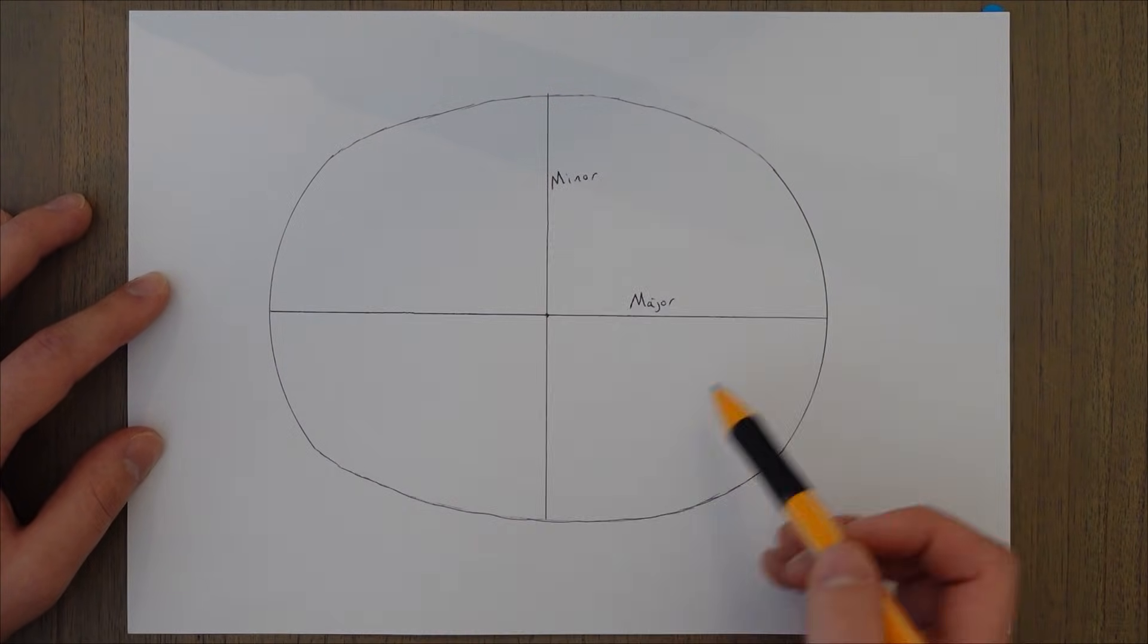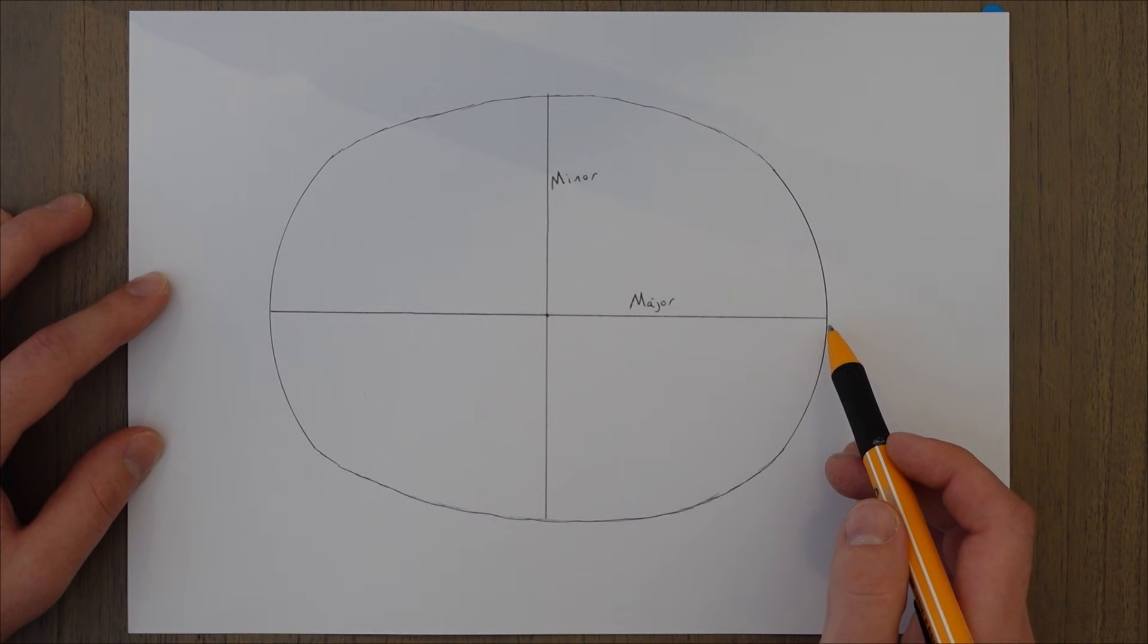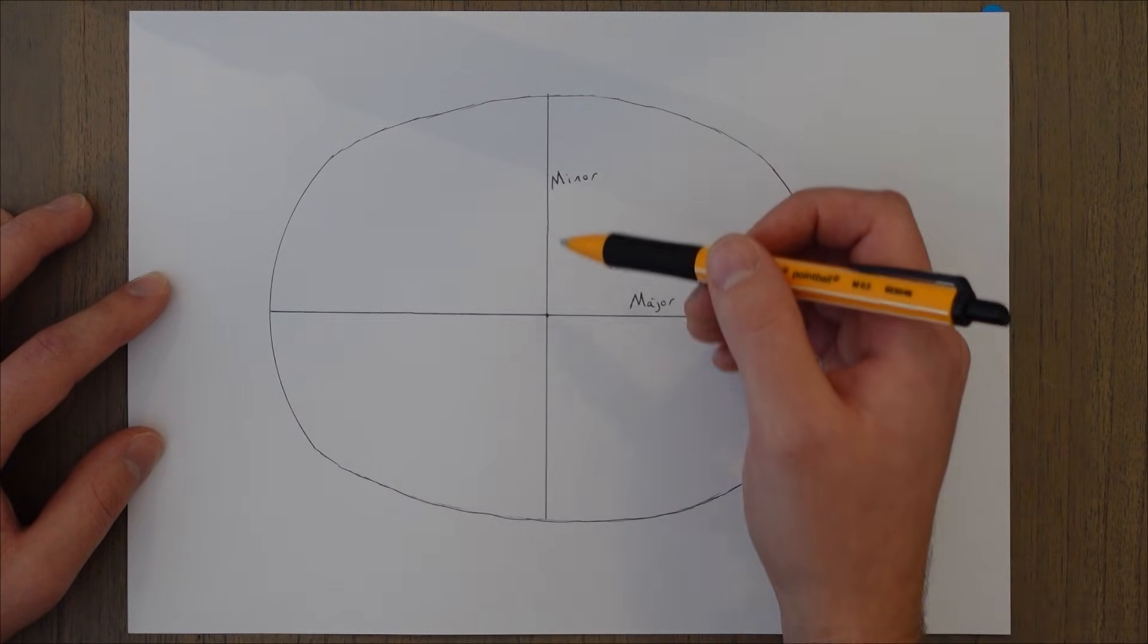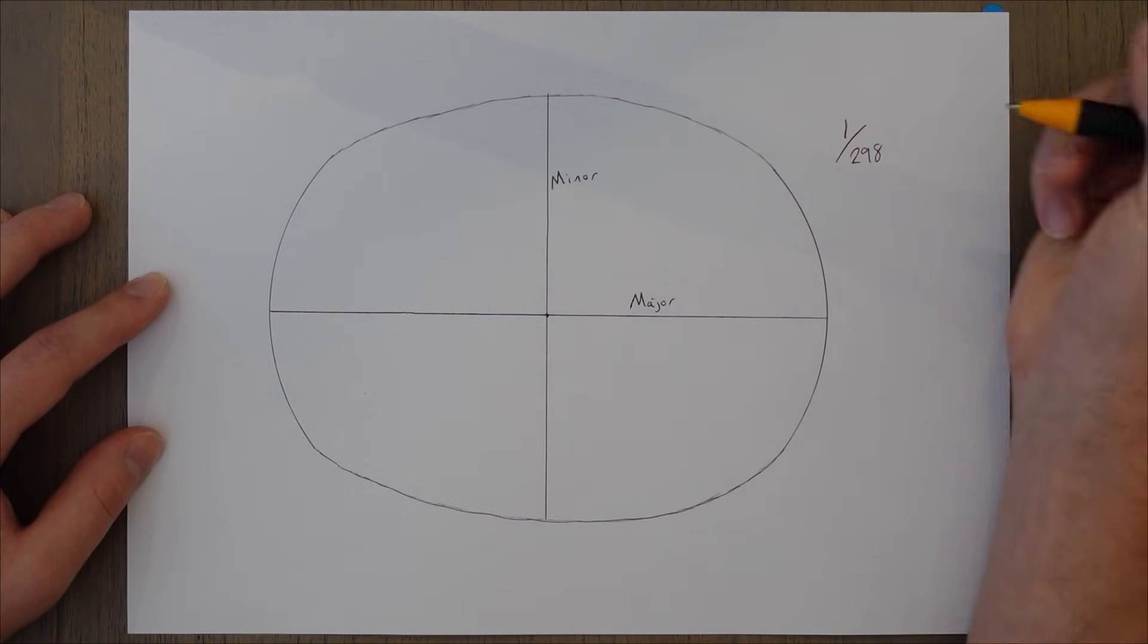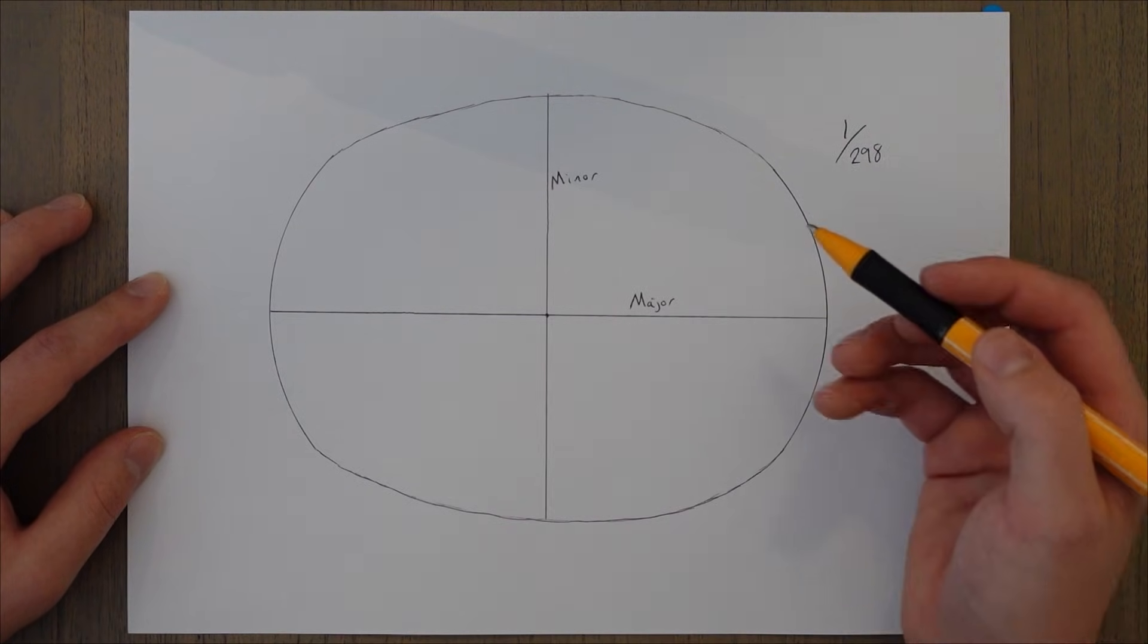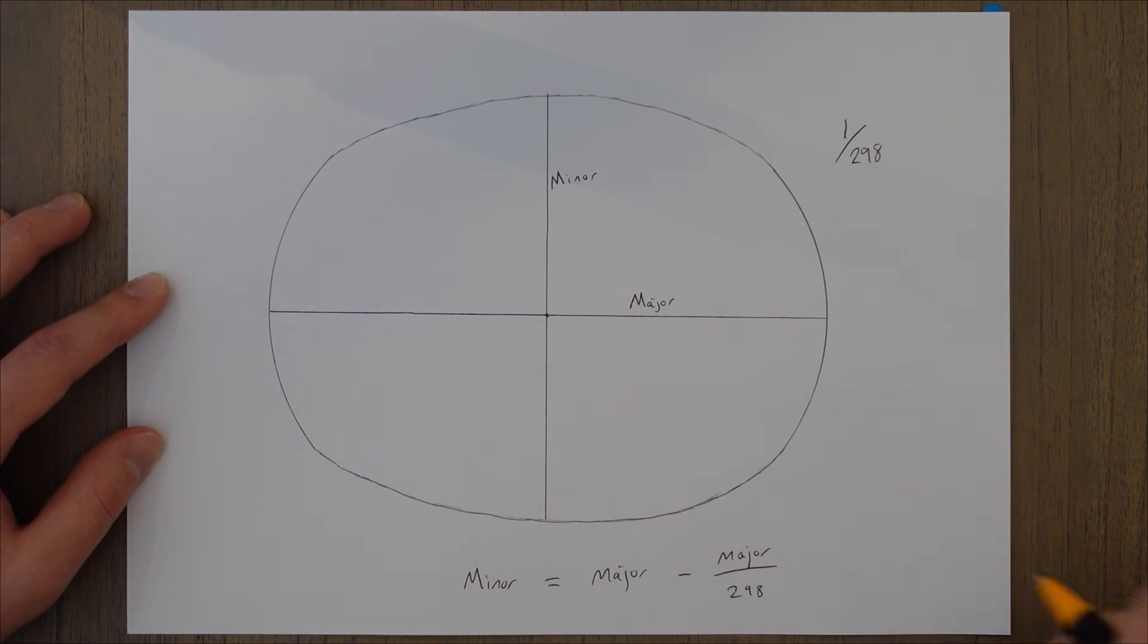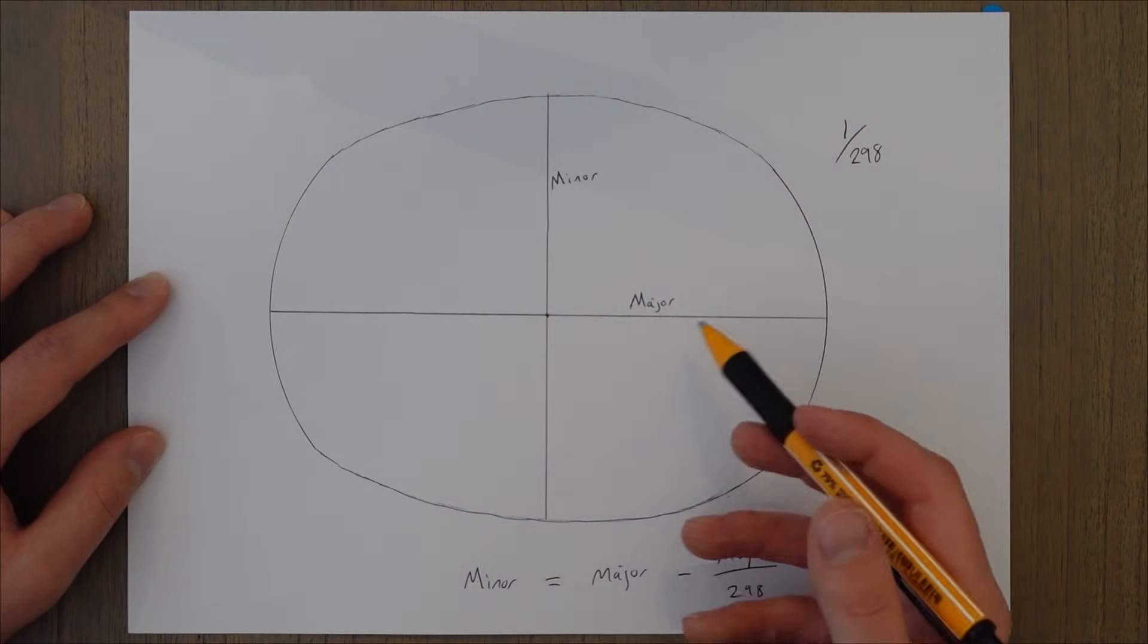So if you take a cross section of the Earth you would see something like this. This is obviously very exaggerated. The major axis goes from the equator to the other side of the Earth at the equator and the minor axis goes from pole to pole. The ratio of ellipticity describes how much shorter the minor axis is compared to the major. The ratio of this on Earth is 1 to 298, which essentially means that the minor axis is 1 to 298 shorter than the major. Or the minor's length is equal to the major minus a 298th of the major axis.